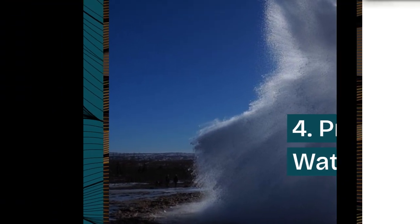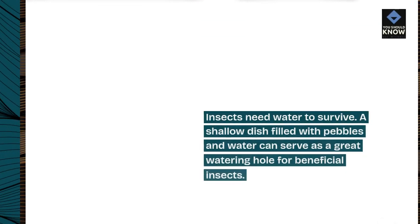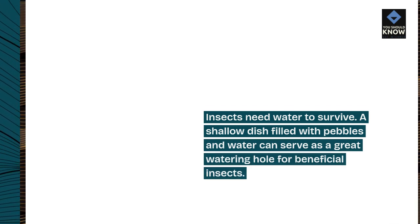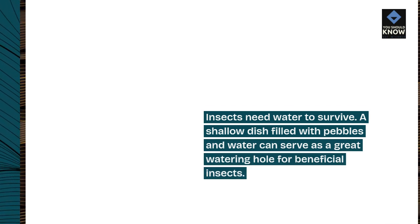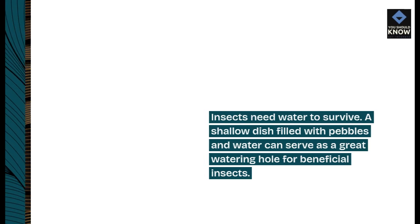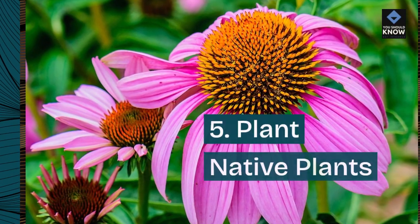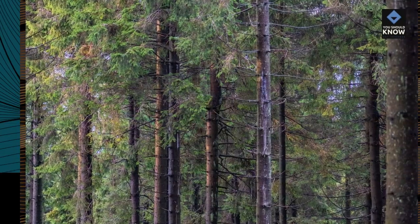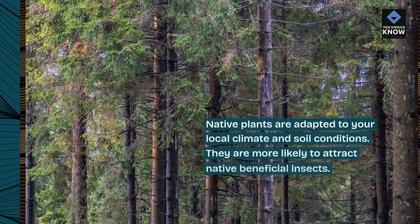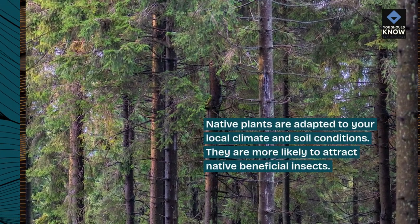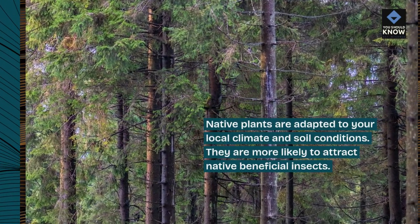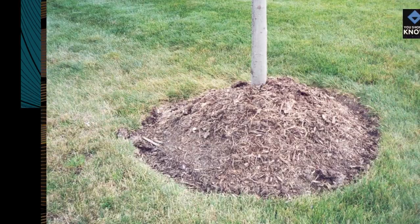Tip 4: Provide a water source. Insects need water to survive. A shallow dish filled with pebbles and water can serve as a great watering hole for beneficial insects. Tip 5: Plant native plants. Native plants are adapted to your local climate and soil conditions, and they are more likely to attract native beneficial insects.